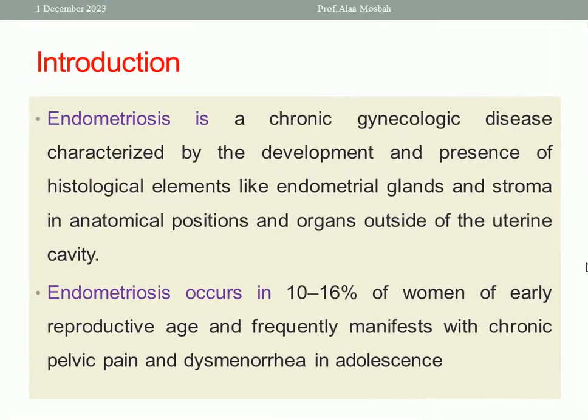Let us start with the definition of endometriosis. Endometriosis is a chronic gynecologic disease characterized by the development and presence of endometrial glands and stroma in anatomical positions and organs outside of the uterine cavity. So when there is endometrial gland and stroma outside the uterine cavity, it is called endometriosis. It can occur in the ovary, uterosacral ligaments, sub-ovarian fossa, pelvic peritoneum, and so on. Endometriosis occurs in 10–16% of women of early reproductive age and frequently manifests with chronic pelvic pain and dysmenorrhea in adolescence.